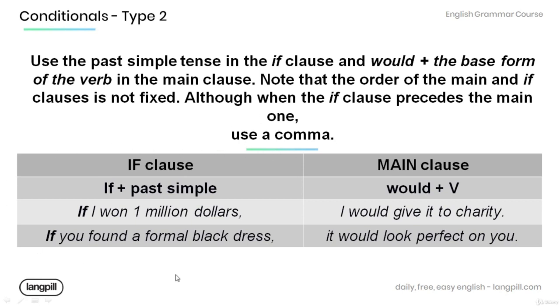Have a look at the table below. The if clause of the type 2 conditionals is formed by using if plus past simple, and the main clause is would plus verb. Have a look at the examples below. If I won one million dollars, I would give it to charity. An event in the future that's unlikely to happen.